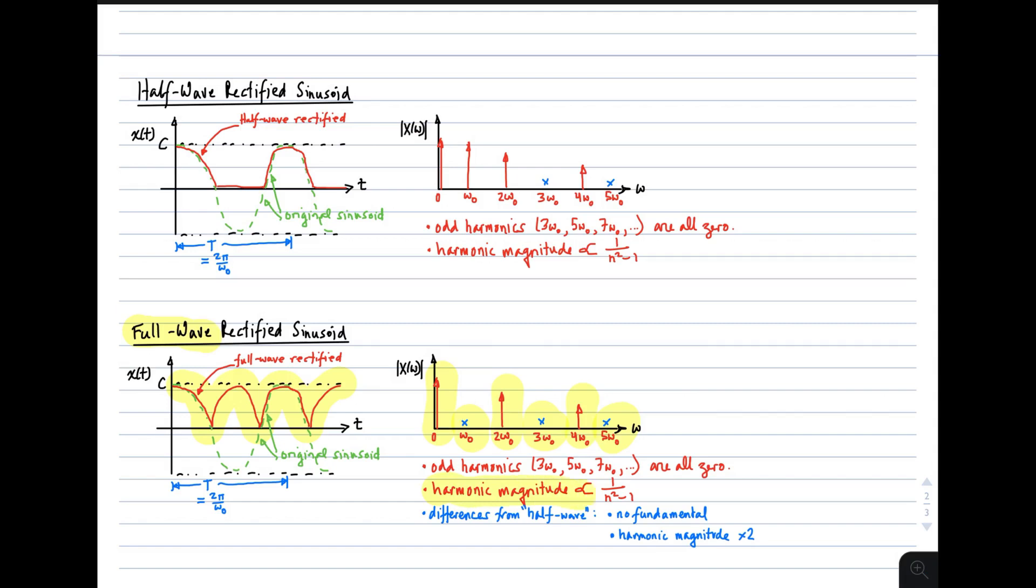Harmonic magnitude, as before, is proportional to 1/(n²-1), so they roll off pretty quickly with increasing harmonic index. So we'll note the following differences from half-wave rectification: no fundamental, and the harmonic magnitude is actually twice the harmonic magnitude for half-wave rectified sinusoids. And that's simply because we have twice the energy. We have these zero periods in the half-wave rectified sinusoid filled with more waveforms. So harmonic magnitude goes up by a factor of 2.